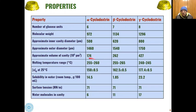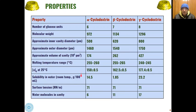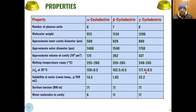The melting point range is similar across all three: alpha cyclodextrin is 255–260°C, beta is 255–265°C, and gamma is 240–245°C, so melting point alone cannot distinguish them accurately. The optical rotation (αD) differs: alpha is +150 ± 0.5, beta is 162.5, and gamma is 177.4, allowing differentiation between the three types.